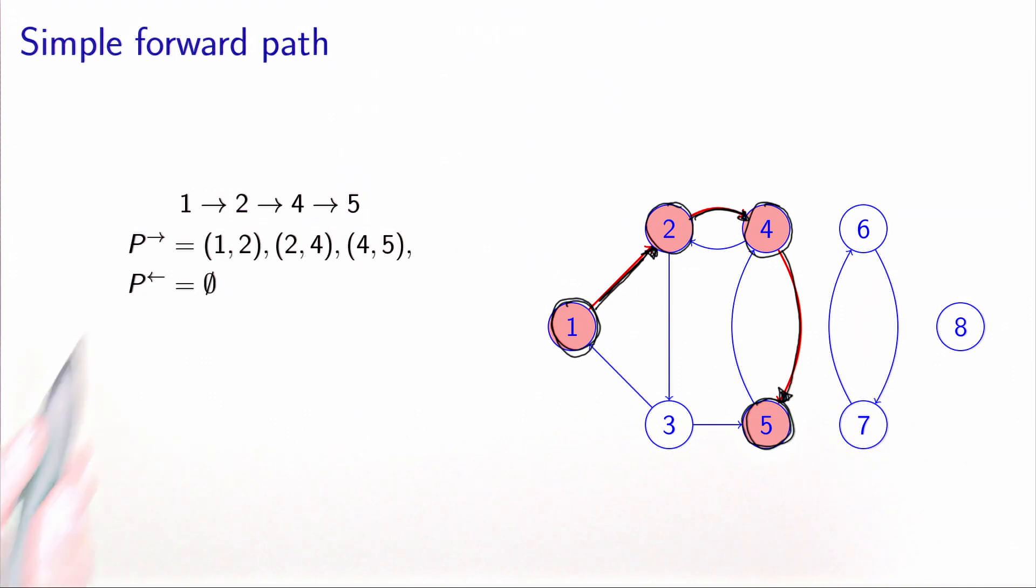So we will denote by p with an arrow pointing to the right all the forward arcs in the path. In this case, we have only forward arcs. This is why the path is called a forward path. The set of backward arcs is empty in this example.